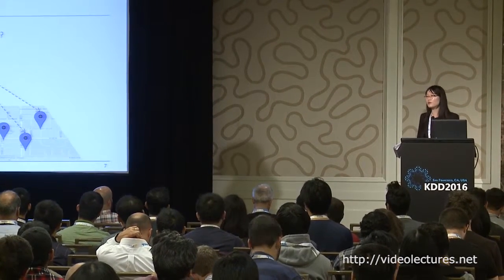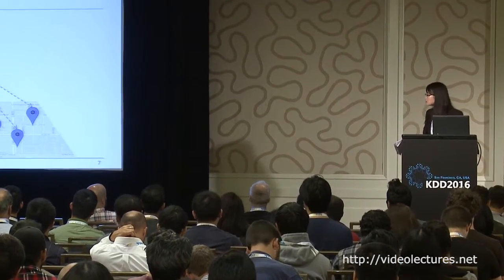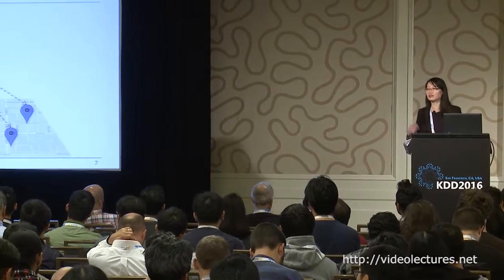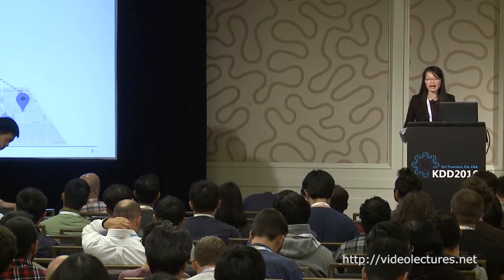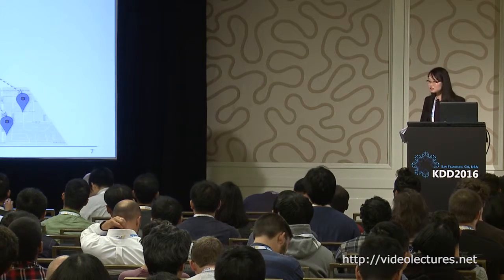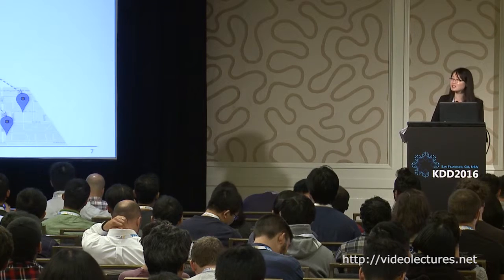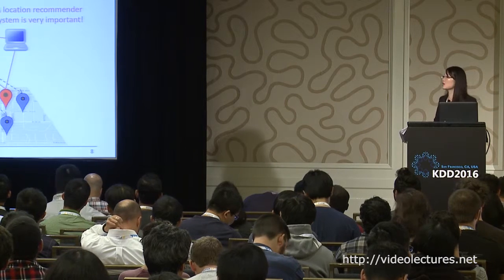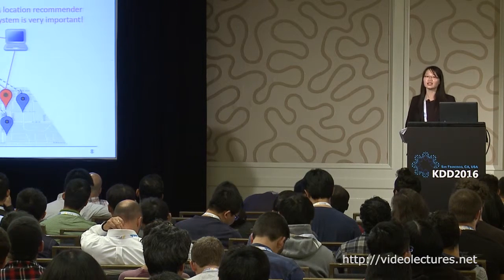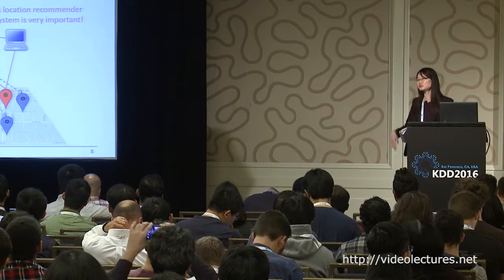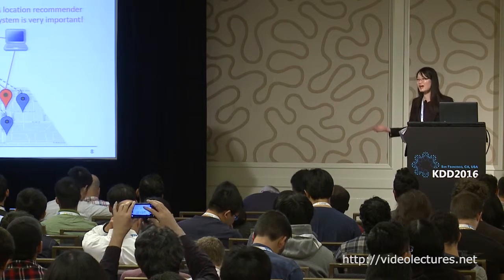Moreover, when a user visits a new region or a new area, it is like me — I'm living in Charlotte, now I'm coming to San Francisco. It is very hard for me to choose a right location to visit. To cope with these issues, it is very needed to build a location recommender system.